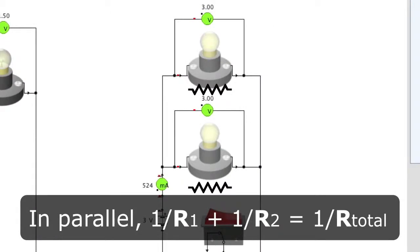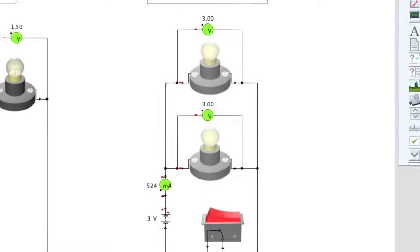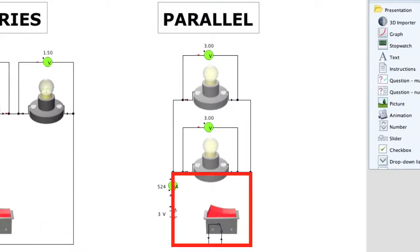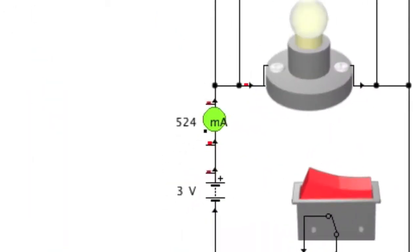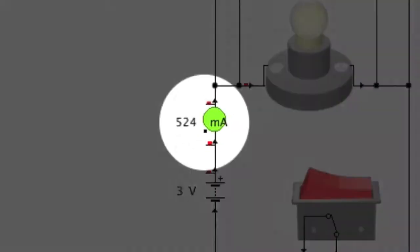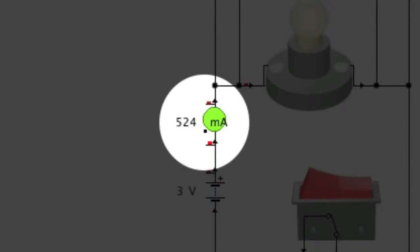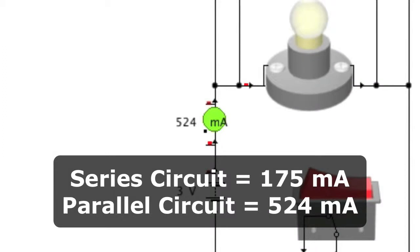Comparing adding resistors in series, adding them in parallel provides much lower resistance because the additional loops in a parallel circuit provide alternate pathways for current to travel. This is confirmed by the ammeter reading for the circuit. It shows 524 milliamps flowing — that's three times the amount of current as the series circuit.